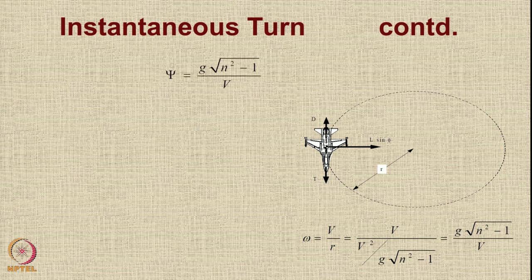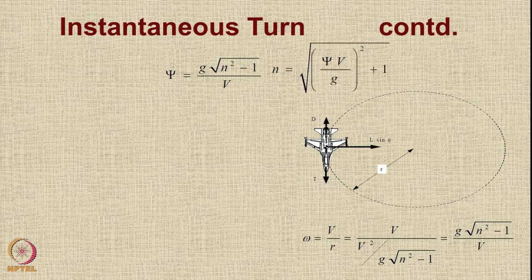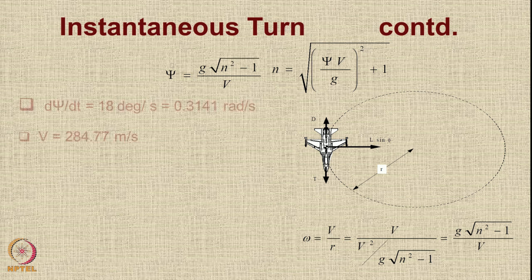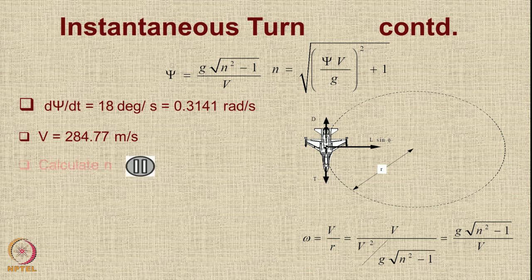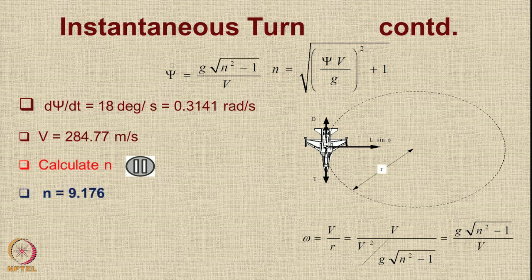Rearranging the expression in terms of psi (which is omega), we need to calculate n. The turn rate psi-dot is 18 degrees per second, which is 0.3141 radians per second, and V was calculated to be 284.77 meters per second. Putting in the numbers using the formula, we get the value of n as 9.176. In other words, this aircraft is pulling 9.176 g when it undergoes an 18 degree per second turn under these conditions.